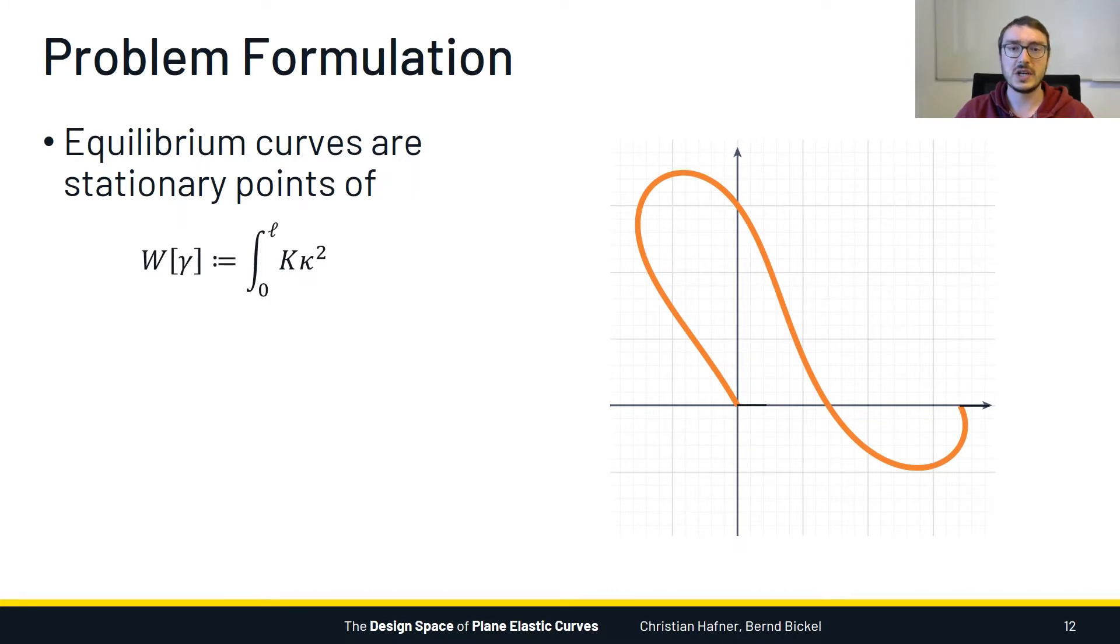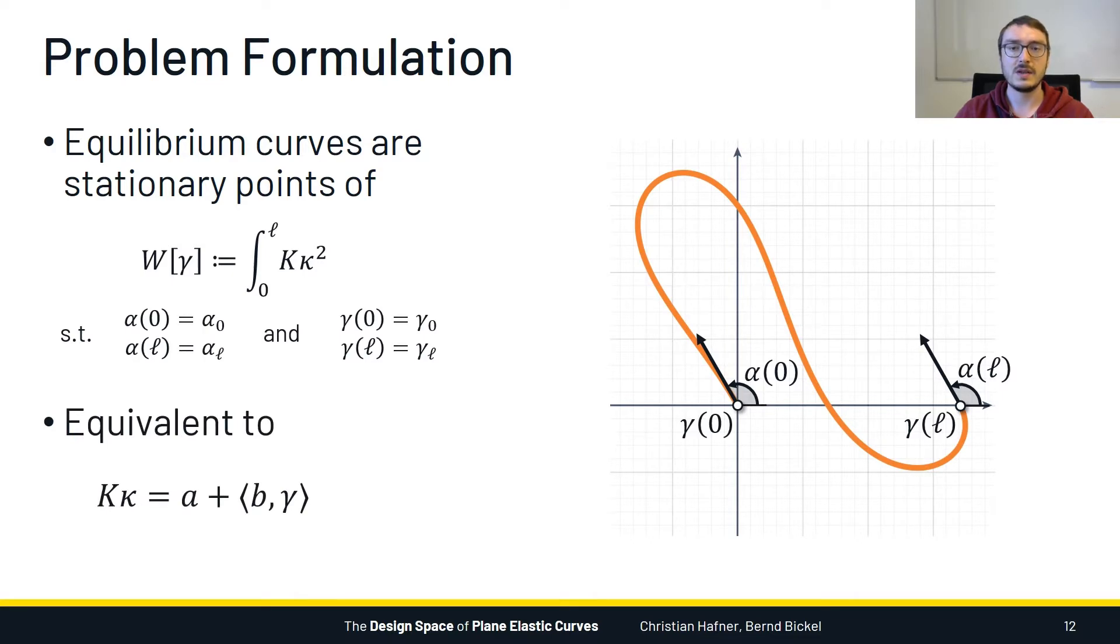Now let's see how to arrive at the deformed shape mathematically. Elastica theory tells us that equilibrium curves are stationary points of an energy, which is given by the integral over the stiffness times square of the curvature. We also need to supply boundary conditions, fixing both the tangents and positions of both boundary points. One can show that stationary points of the energy are characterized by the moment equilibrium equation. This equation says that the internal moment, given by the product of stiffness and curvature, equals the moment generated by the boundary conditions, which is the expression on the right-hand side. And this equation holds for some choice of the constants A and B.